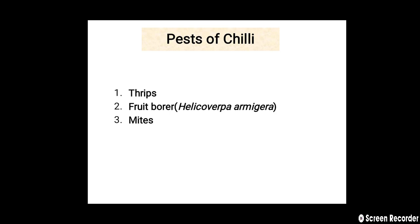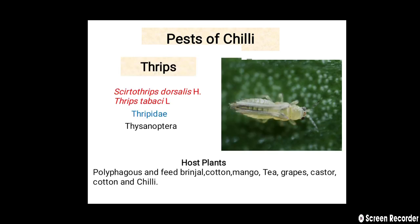So there are three different major pests of chili. First one is thrips, second one is fruit borer, that is Helicoverpa armigera, and third one is mites on chili. There are two species of thrips which attack chili crop: first is Scirtothrips dorsalis and second is Thrips tabaci. These are the two species which attack chili crop.